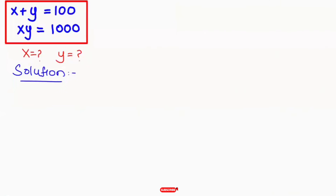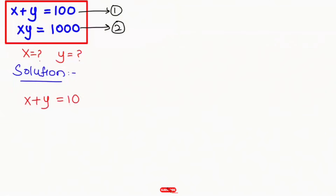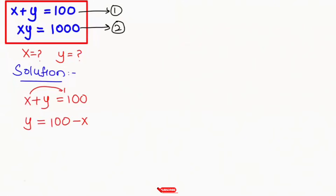First, I'm going to name this equation as 1 and this as 2. In the first step I'm going to take equation 1 and make y the subject. x plus y is equal to 100, and I'm going to make y the subject, so I'm going to take x to the right hand side, so it will turn to negative x. This is our equation 3.